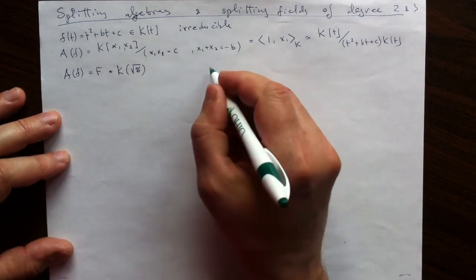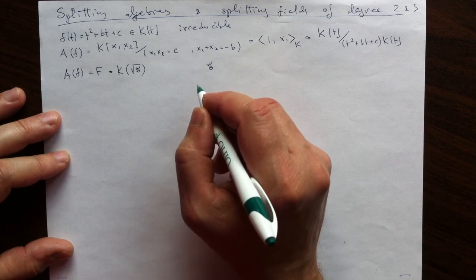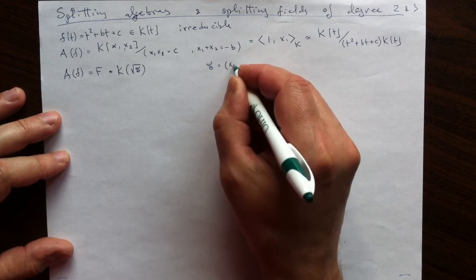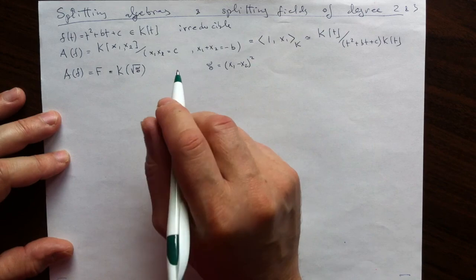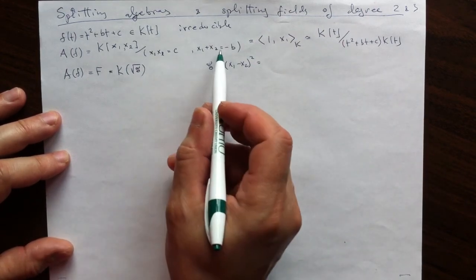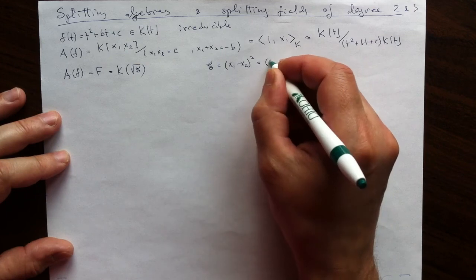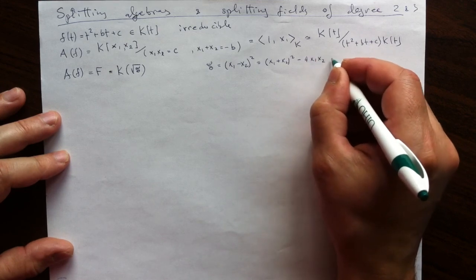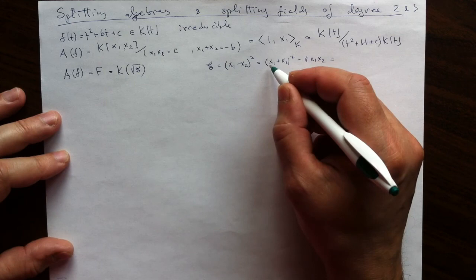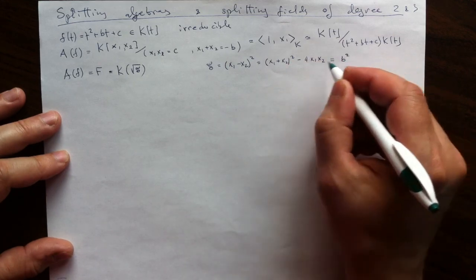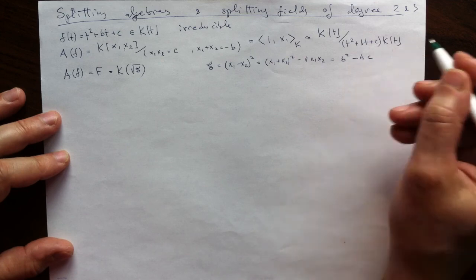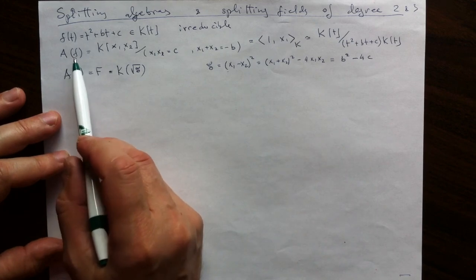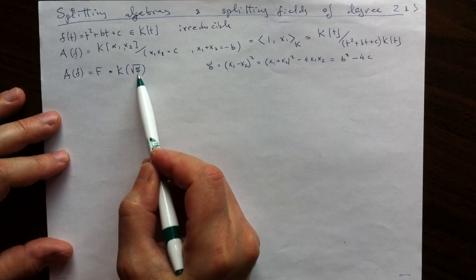The splitting field can be explicitly written as the result of attaching to the scalars the square root of the discriminant. The discriminant for this quadratic polynomial is just x1 minus x2, the difference of the roots, squared. It is a combination of the coefficients: we can write it as (x1 + x2) squared minus four times x1·x2, which in terms of coefficients is b squared minus 4c. And x1 minus x2 inside our splitting algebra is our square root of the discriminant.